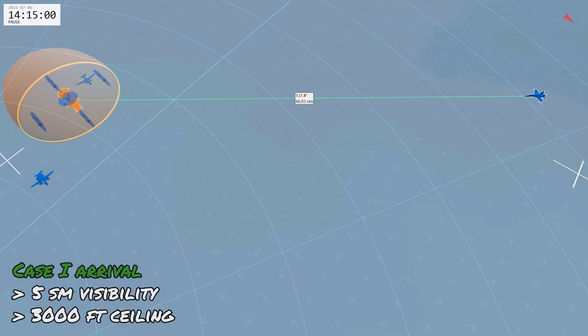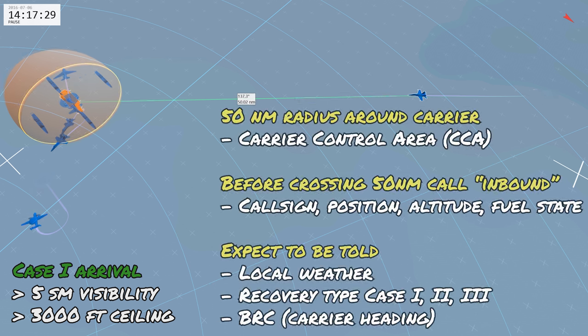For a Case 1 arrival we can expect the visibility to be greater than five statute miles and the ceiling greater than three thousand feet. As we approach the carrier there's a 50 nautical mile radius around it called the carrier control area, and before we cross this boundary we need to call inbound. This radio call includes our call sign, position, altitude and fuel state. In return, control will tell us the local weather, the recovery type of Case 1, 2 or 3, and the BRC which is the carrier's heading — take note of this for later use.